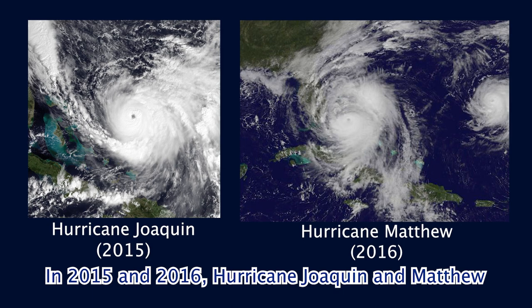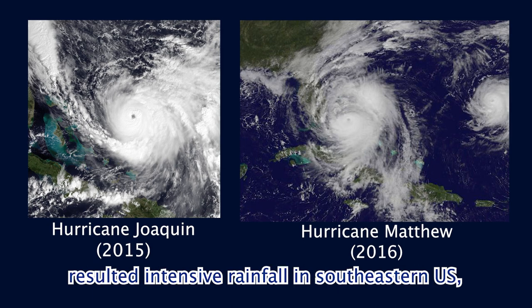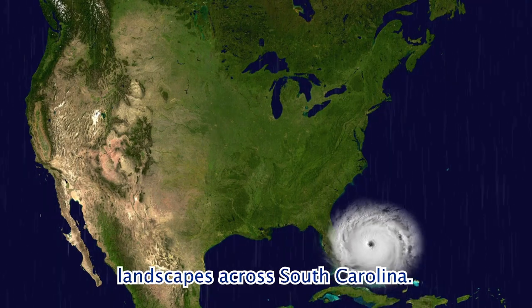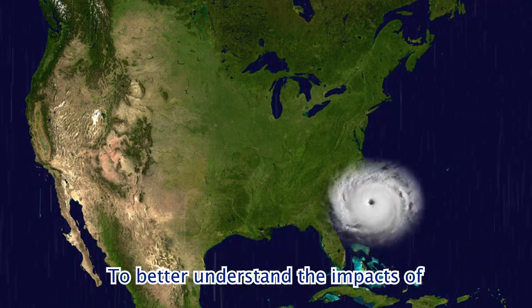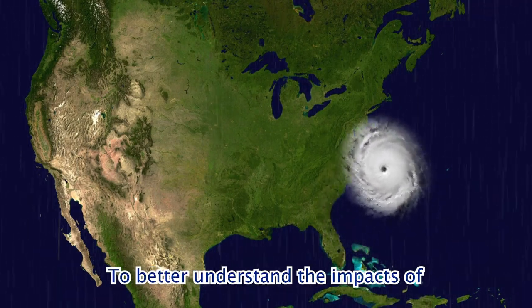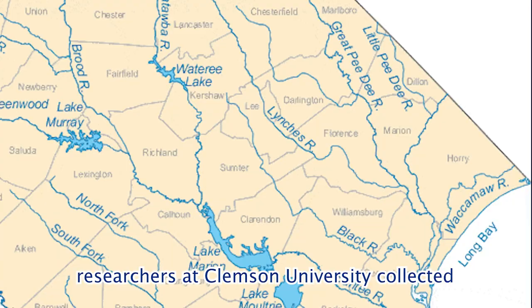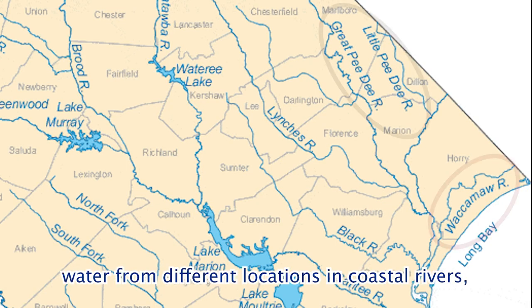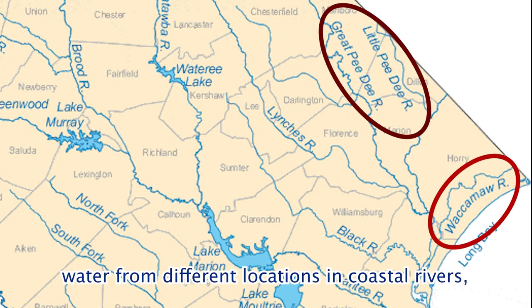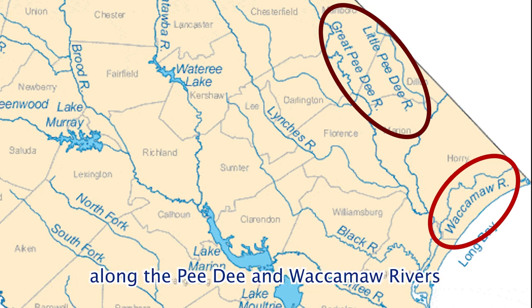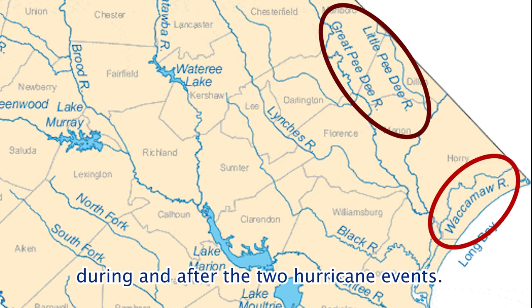In 2015 and 2016, Hurricanes Joaquin and Matthew resulted in intensive rainfall in the southeastern U.S., causing extreme flooding across many landscapes in South Carolina. To better understand the impacts of flooding water on drinking water quality, researchers at Clemson University collected water from different locations in coastal rivers, representing different land uses, along the Pee Dee and Waccamaw rivers during and after the two hurricane events.